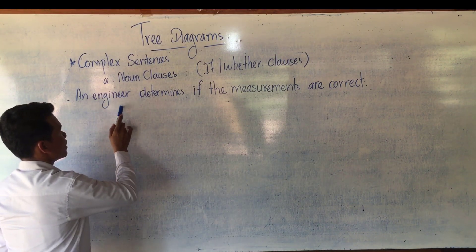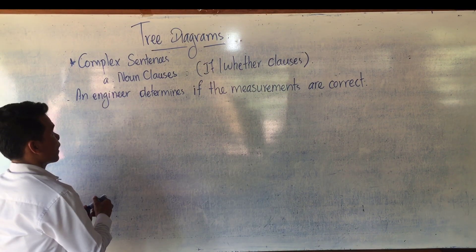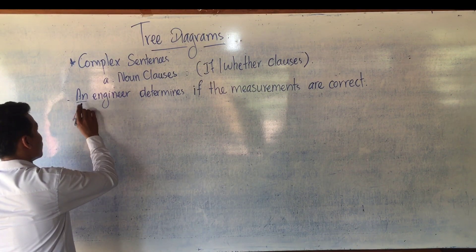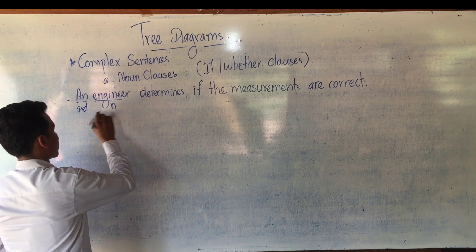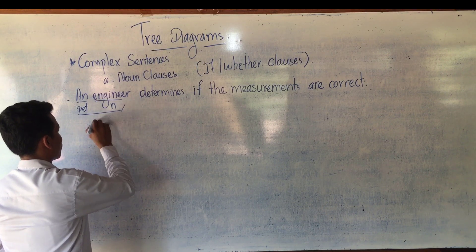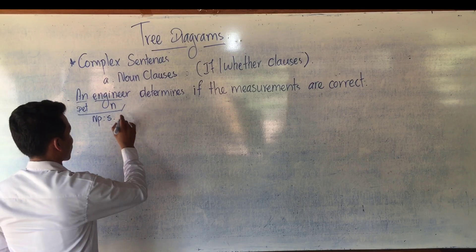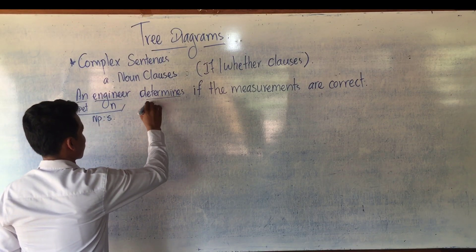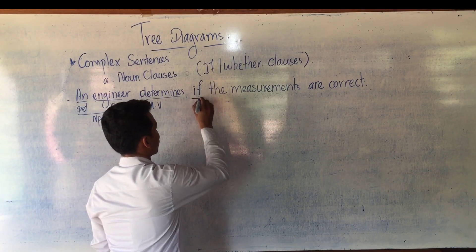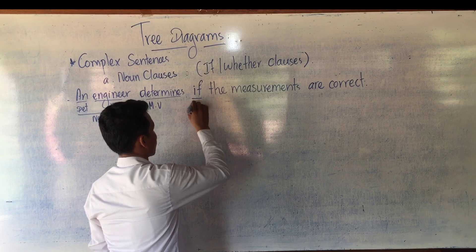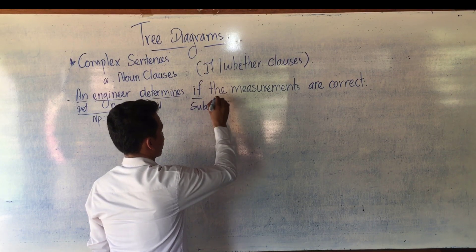The example sentence is: 'An engineer determines if the measurements are correct.' Please analyze the sentence with me. 'An engineer' — 'an' is a determiner, 'engineer' is a noun, so the determiner and noun become a noun phrase, which is the subject. 'Determines' is the main verb. 'If' is the clause maker or subordinator in a complex sentence.